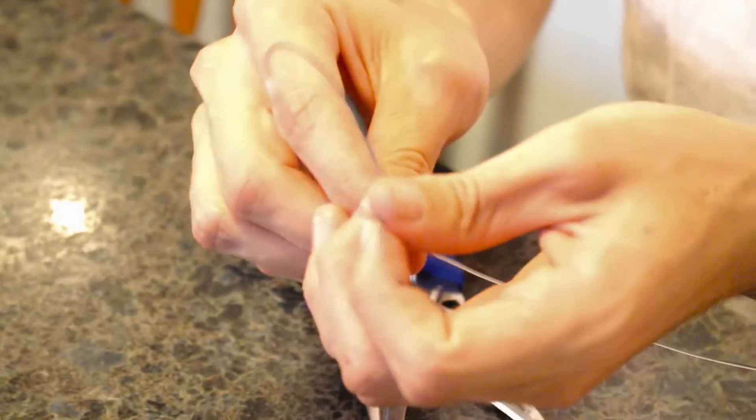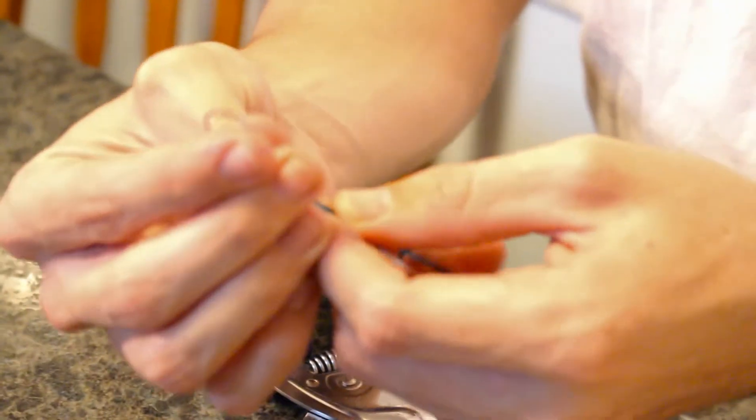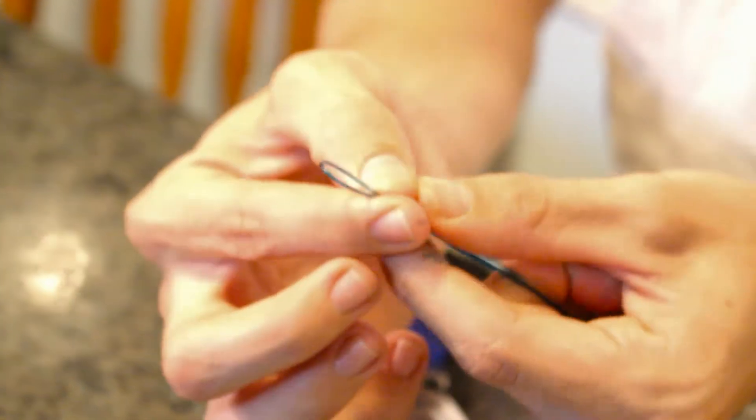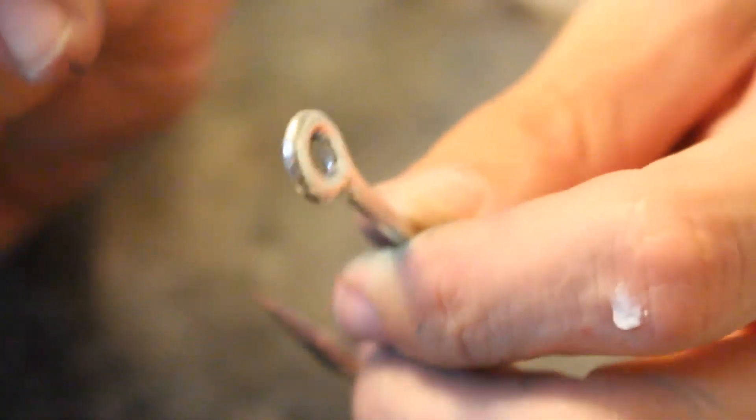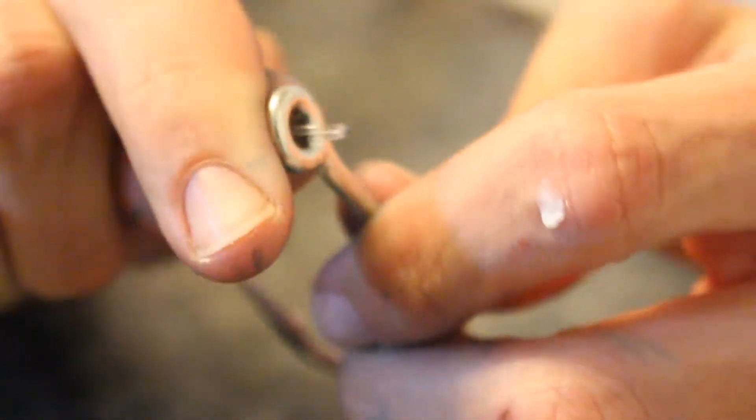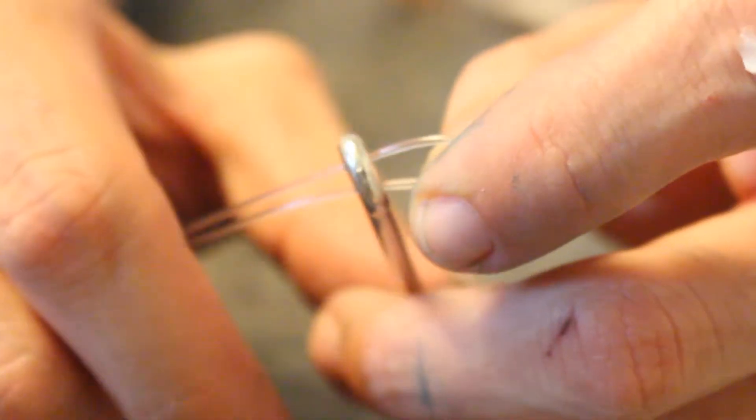So the first step is to do the polymer knot. What we're going to do is I'm going to bend this into a double line, just like that. That way I can put it through the eye of the hook. Take it, push it right through that eye, like that. That's the first step.